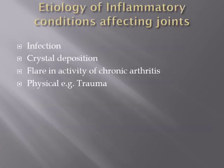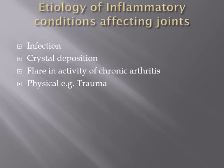Etiology of inflammatory conditions affecting the joints. The inflammation may be caused by infection from an organism — bacteria, virus, fungus, or parasite. It may also be caused by crystal deposition; the most well-known is gout, where uric acid crystals are deposited in the joints. Gout characteristically affects the big toe in middle-aged males, and inflammation of the big toe due to gout is called podagra.